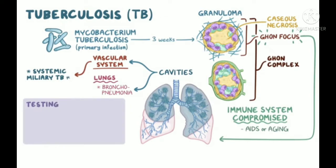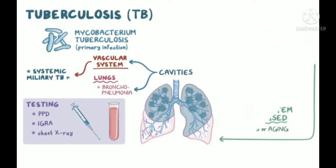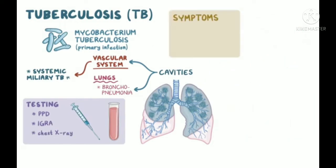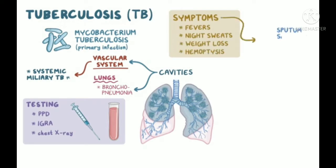Testing for TB starts with a PPD intradermal skin test, or with an IGRA blood test, and a chest x-ray can identify signs of active TB disease. In patients with fevers, night sweats, weight loss, and hemoptysis, a sputum sample can be stained, cultured, and PCR can be done to look for Mycobacterium tuberculosis.